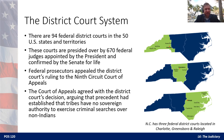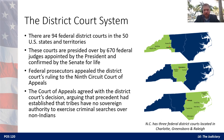Let's talk about the district court system in a little more detail. There are 94 federal district courts in the 50 U.S. states and also some in U.S. territories. In North Carolina, we actually have three — one in Raleigh, one in Greensboro, and one in Charlotte. Federal court matters that originate in different parts of the state are going to end up in one of those three courts.